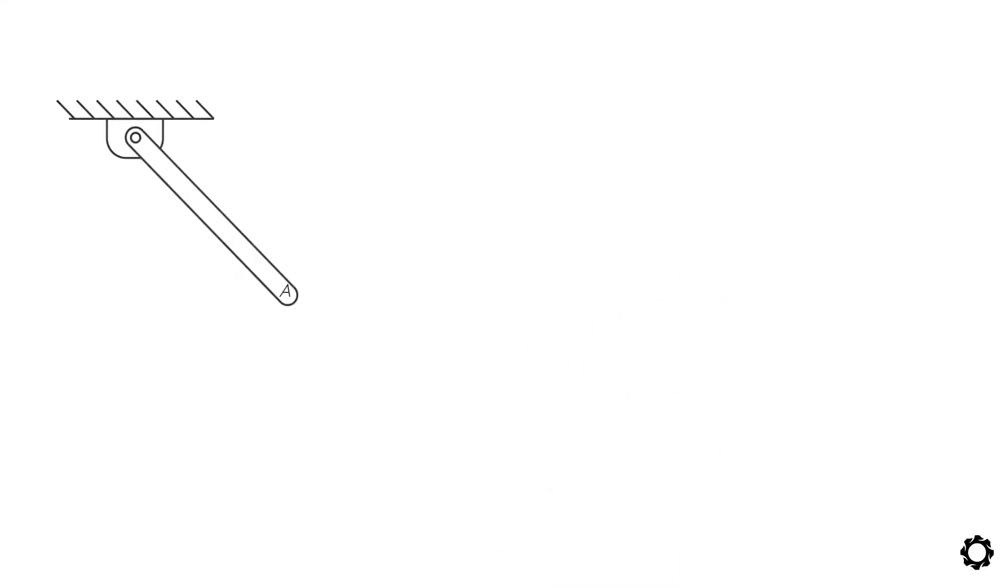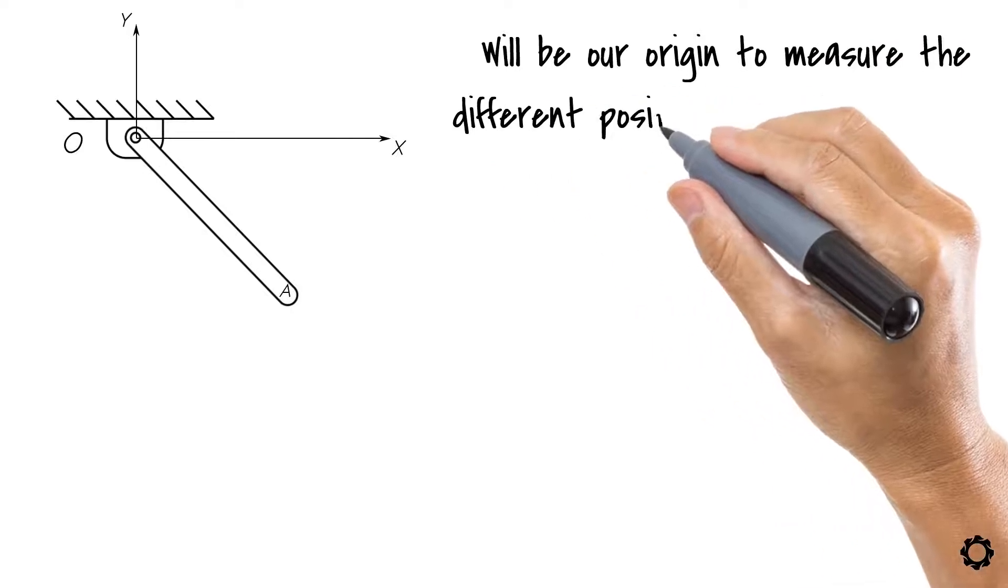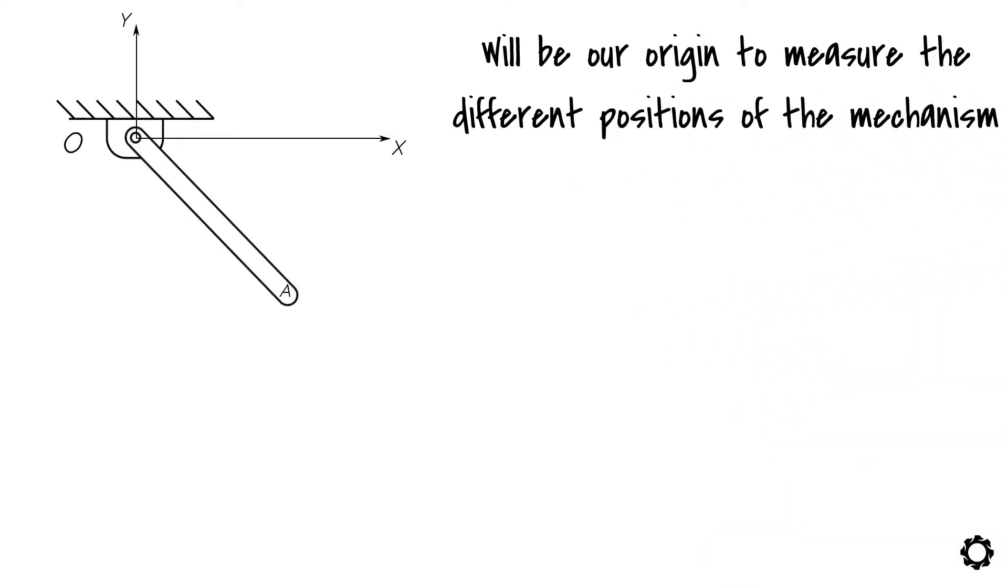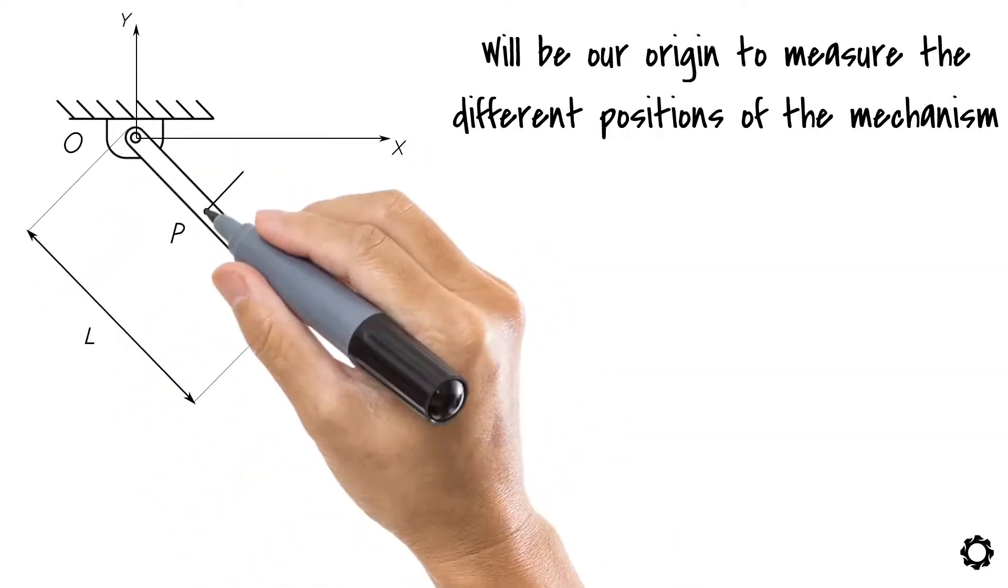Let's bring an inertial or global coordinate system attached to the ground at point O, which will be our origin to measure the different positions of the mechanism. Next, a body coordinate system with origin point P and the x-axis aligned with the longitudinal axis will be placed in the center of the bar.